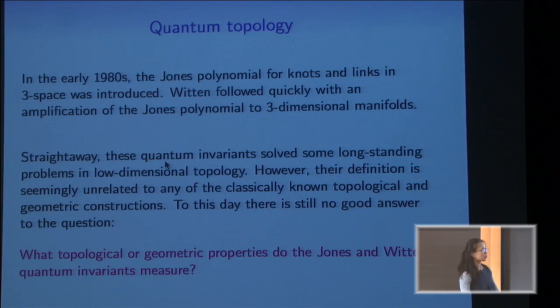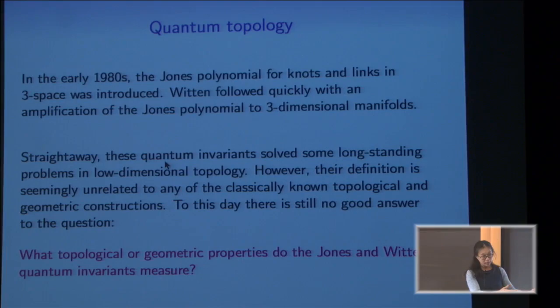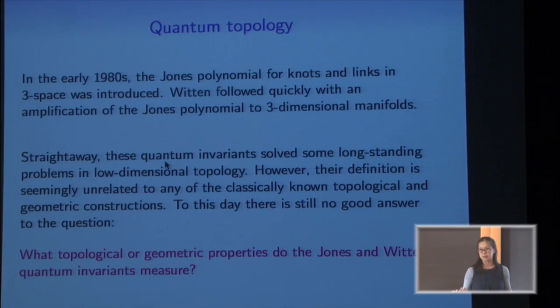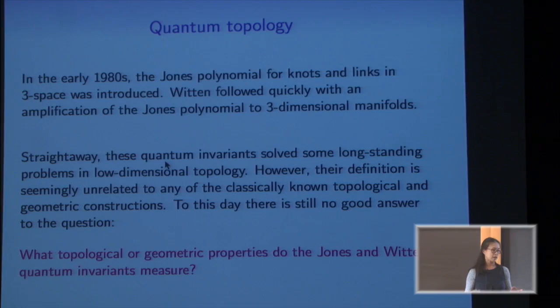This was great, except topologists were deeply unhappy. Excited on one hand, but deeply unhappy in the sense that this construction didn't seem to relate to anything they used to study — like fundamental group, homology, volume, number of crossings in a knot. What in the world do these quantum invariants measure? And actually, to this day, there's still no really good answer. We've gotten closer and have bounds, and there are lots of conjectures, but there's still no definitive answer.